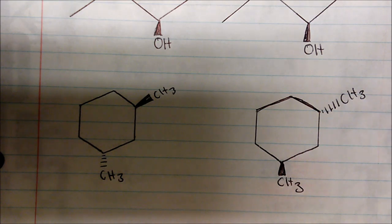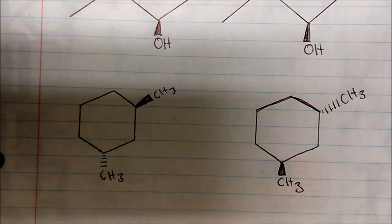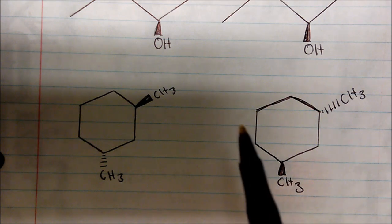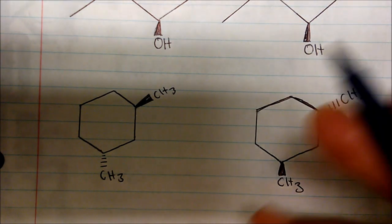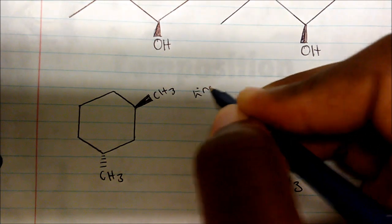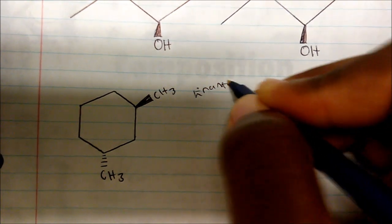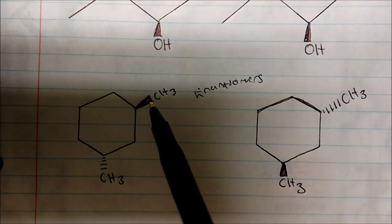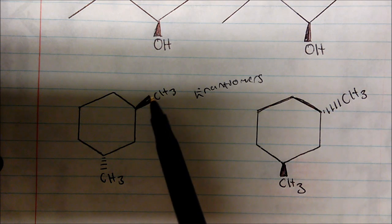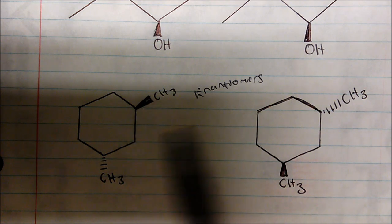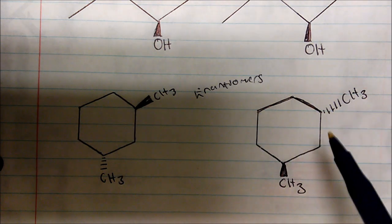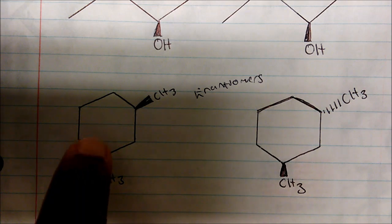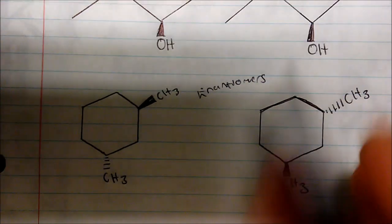Notice that the chiral centers switched. When both chiral centers alternate, that's what we classify as enantiomers. Both my chiral centers changed, so these are enantiomers — that's what we classify as enantiomers when our chiral centers change. And another enantiomer of this compound would be...